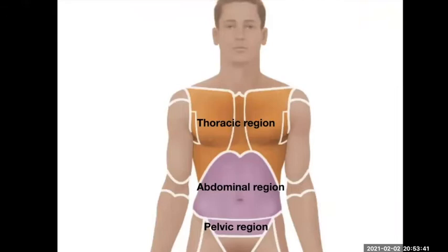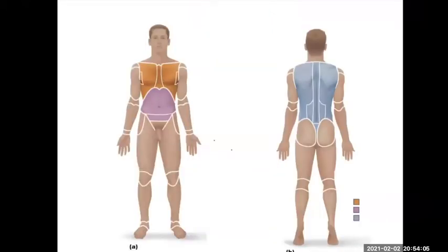Within certain major regions we break things down into smaller regions. The chest area with the rib cage is your thoracic region. Most people are familiar with that word. Your abdominal region is where your stomach and organs are, and then there's your pelvic region below that. So you can break these down into progressively smaller regions.